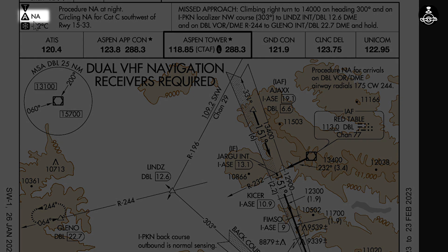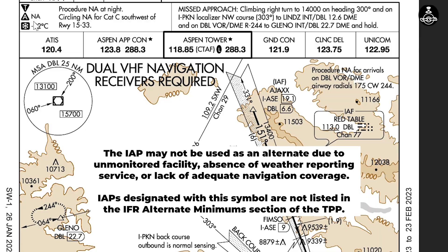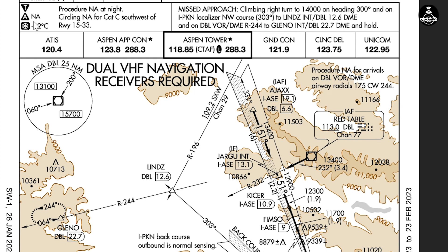The instrument approach procedure may not be used as an alternate due to an unmonitored facility, absence of weather reporting service, or lack of adequate navigation coverage. Instrument approach procedures designated with this symbol are not listed in the IFR alternate minimum section of the TPP — that's what this symbol tells us.